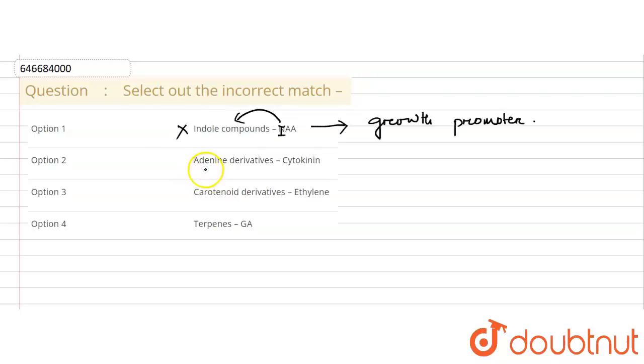In option 2, adenine derivative cytokinin helps in cell division in the plant. Hence, again it is a correct match, so this is not the answer we are looking for.